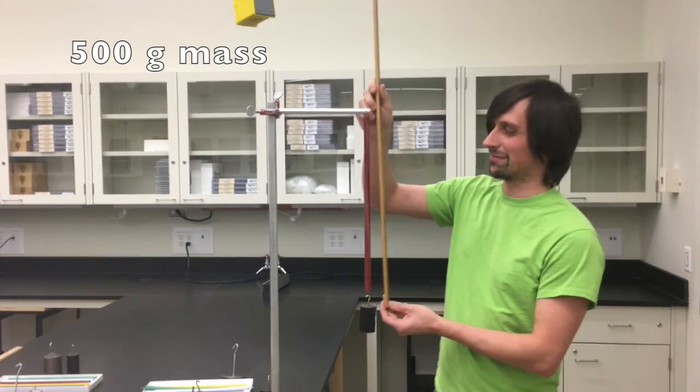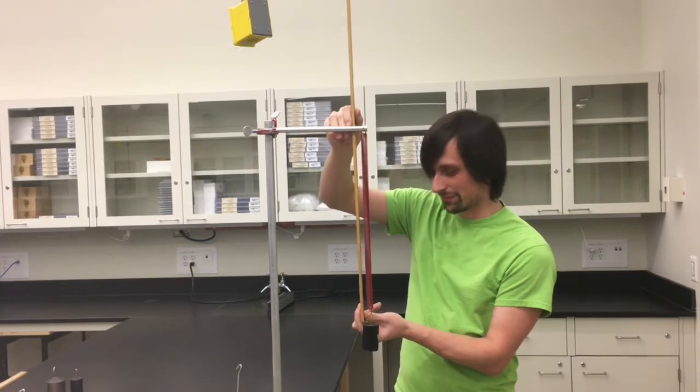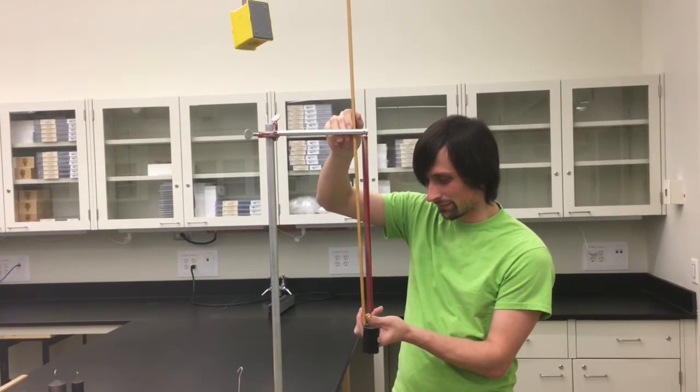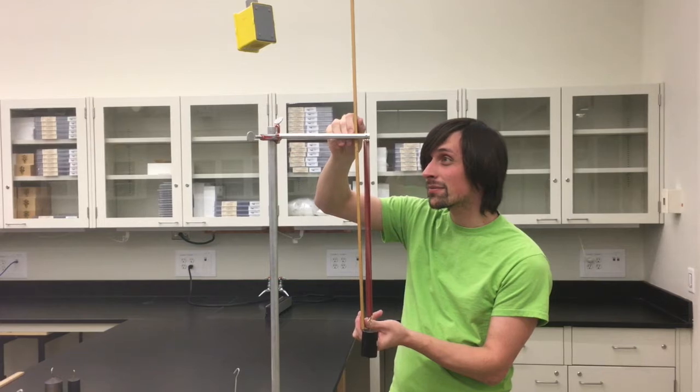Here's your virtual lab partner, Kyle. Kyle is collecting data for you by suspending a 500 gram mass from a red spring. He makes sure that the spring is still, and he measures the distance from the bar holding the spring down to the top of the mass, and he's going to record that in a spreadsheet that we will now provide for you.